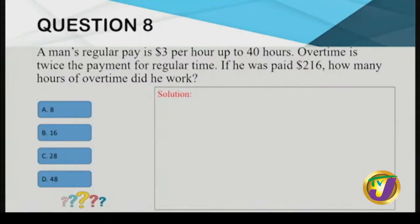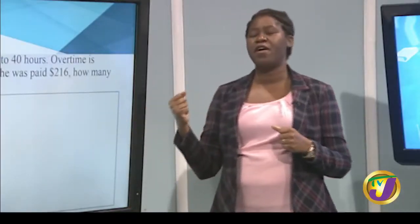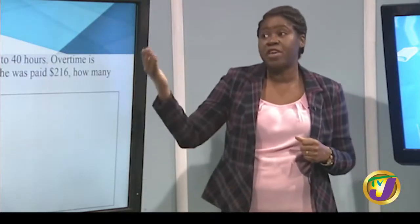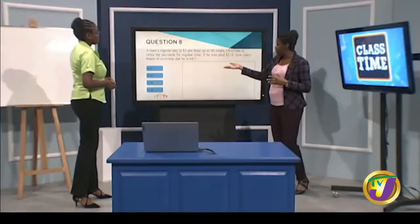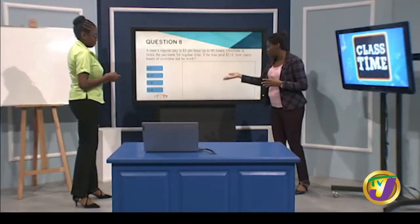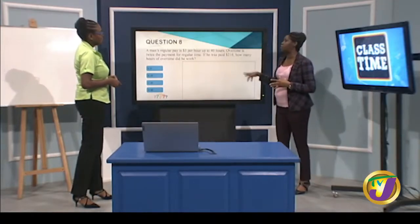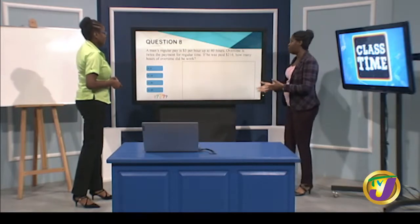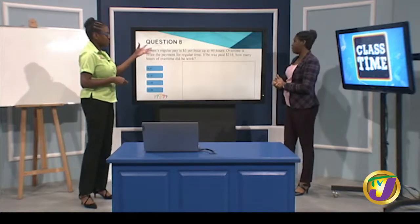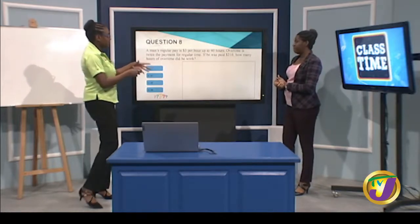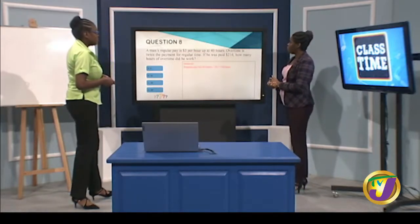Overtime in this case is twice the regular rate: 2 × $3 = $6 per hour for every hour beyond 40. We know the total pay is $216 and we want to find the overtime hours.